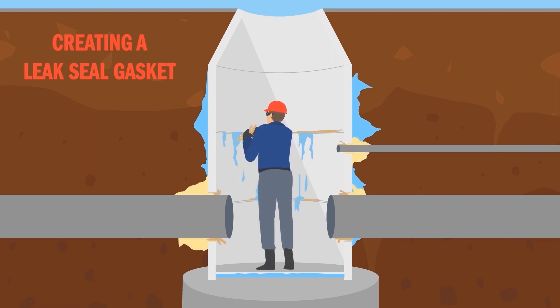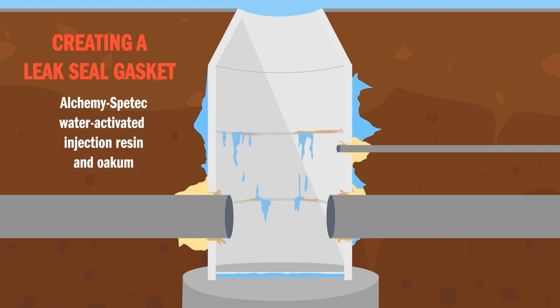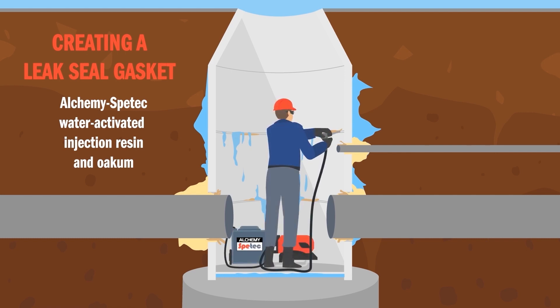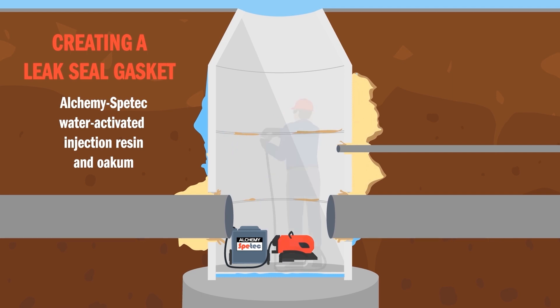Oakum is an oil-free natural fiber that is soaked in resin and packed into the wide cracks and joints with a putty knife, creating a gasket that stops the water leaks. If necessary, resin is then injected through the gasket to fill the void behind the structure.